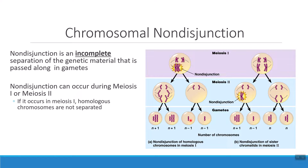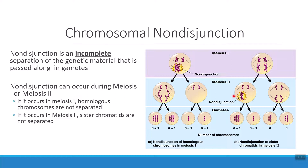If non-disjunction occurs in meiosis 1, none of the gametes that are made actually have the correct amount of genetic information. If non-disjunction occurs in meiosis 2, we still have problems, but not as many as we had with meiosis 1.